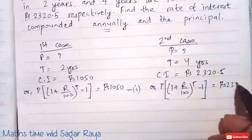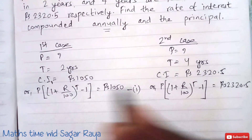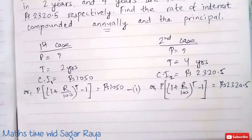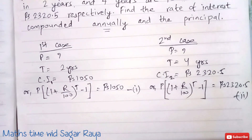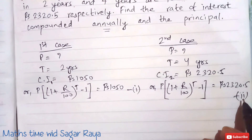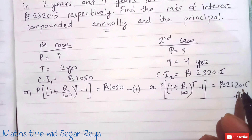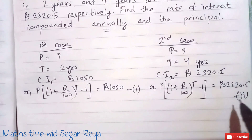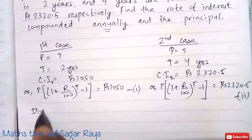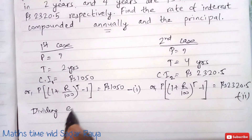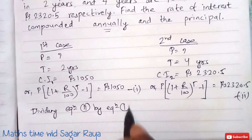For the second case, P times (1 plus R by 100) to the power T, minus 1, equals rupees 2320.5. Let this be equation 2. Since equation 2 is bigger — 2320.5 is greater than 1050 — we are going to divide equation 2 by equation 1.